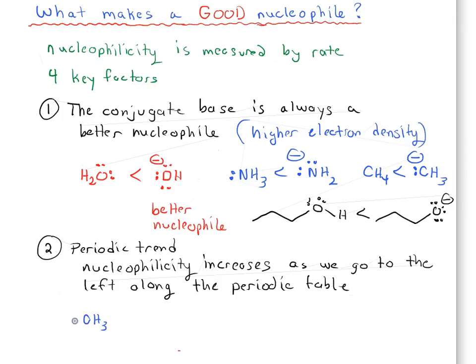So what do I mean by that? Well, let's take these examples. Let's take CH3 minus, and NH2 minus, and OH minus, and F minus. Now, if you remember electronegativity, electronegativity increases as we go up and to the right along the periodic table. So fluoride ion is the most electronegative atom in the periodic table.